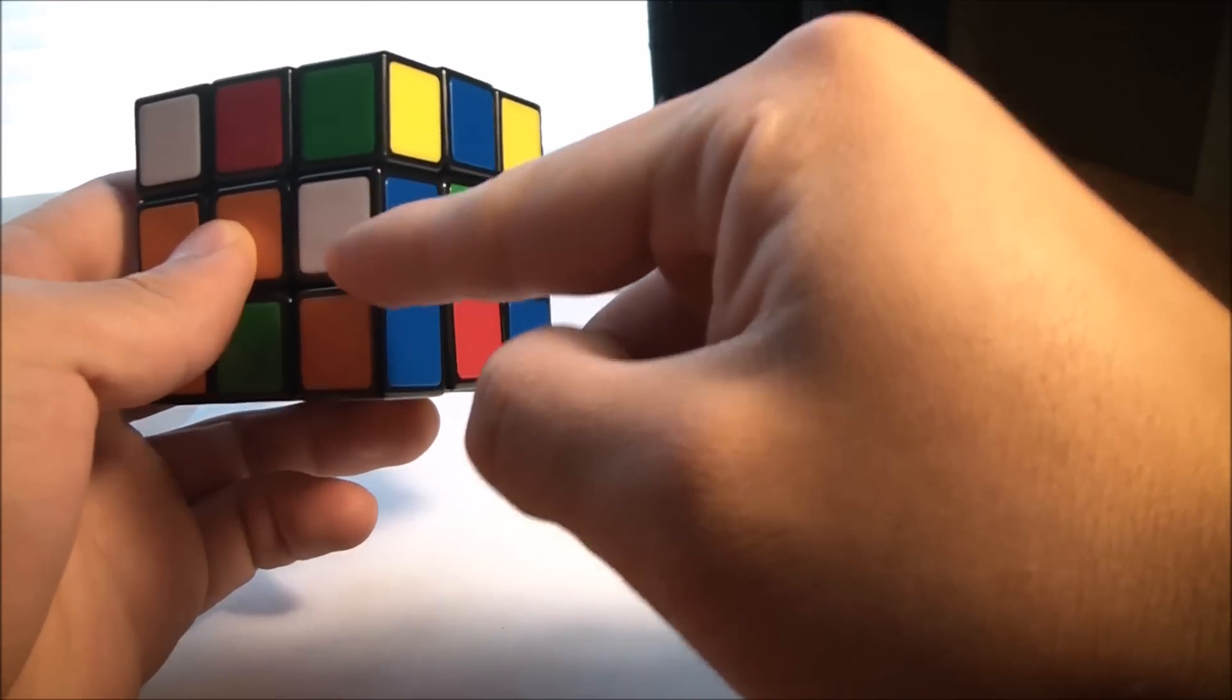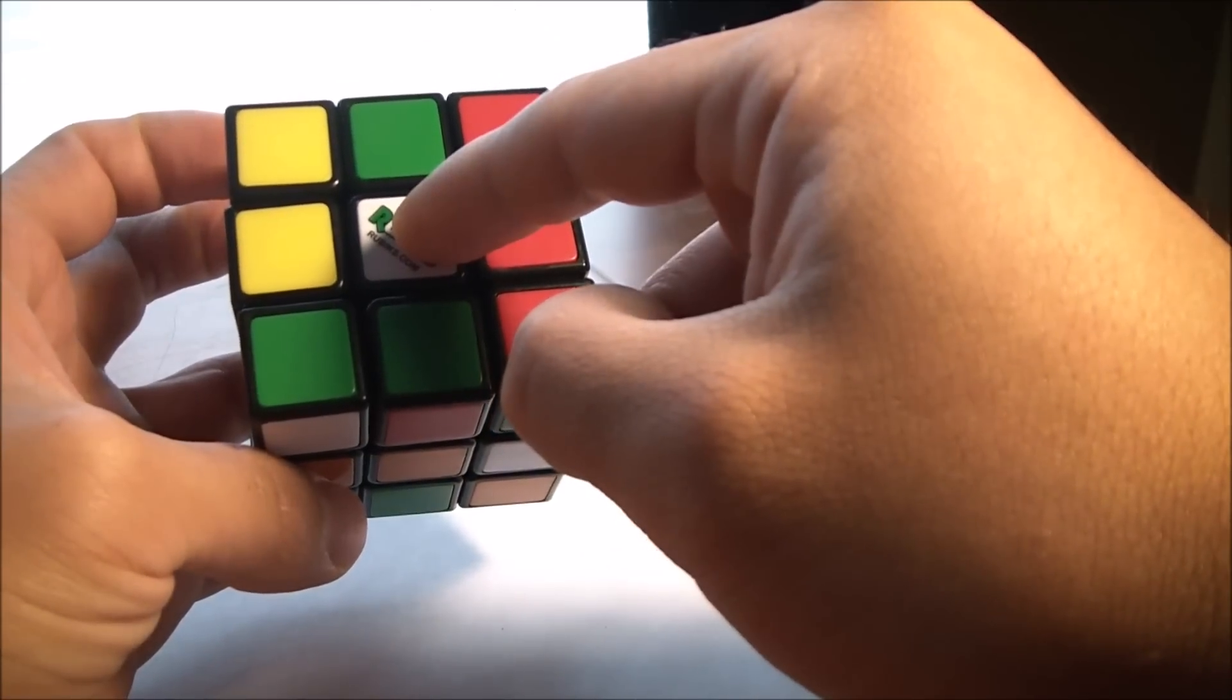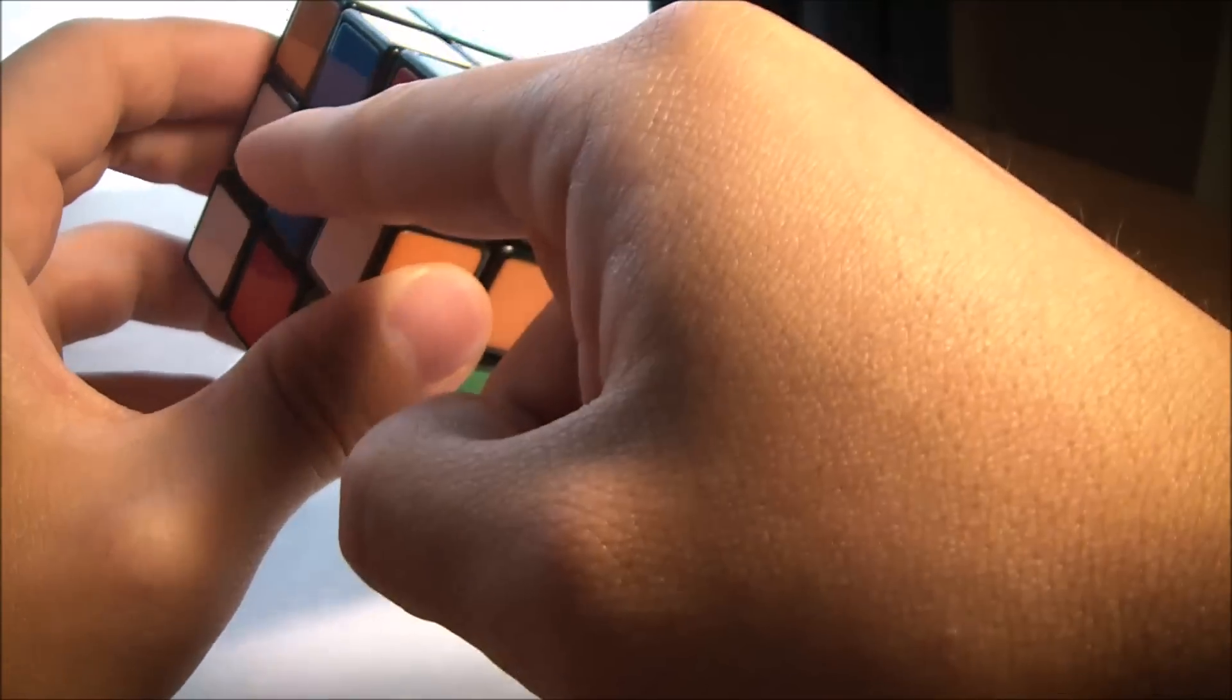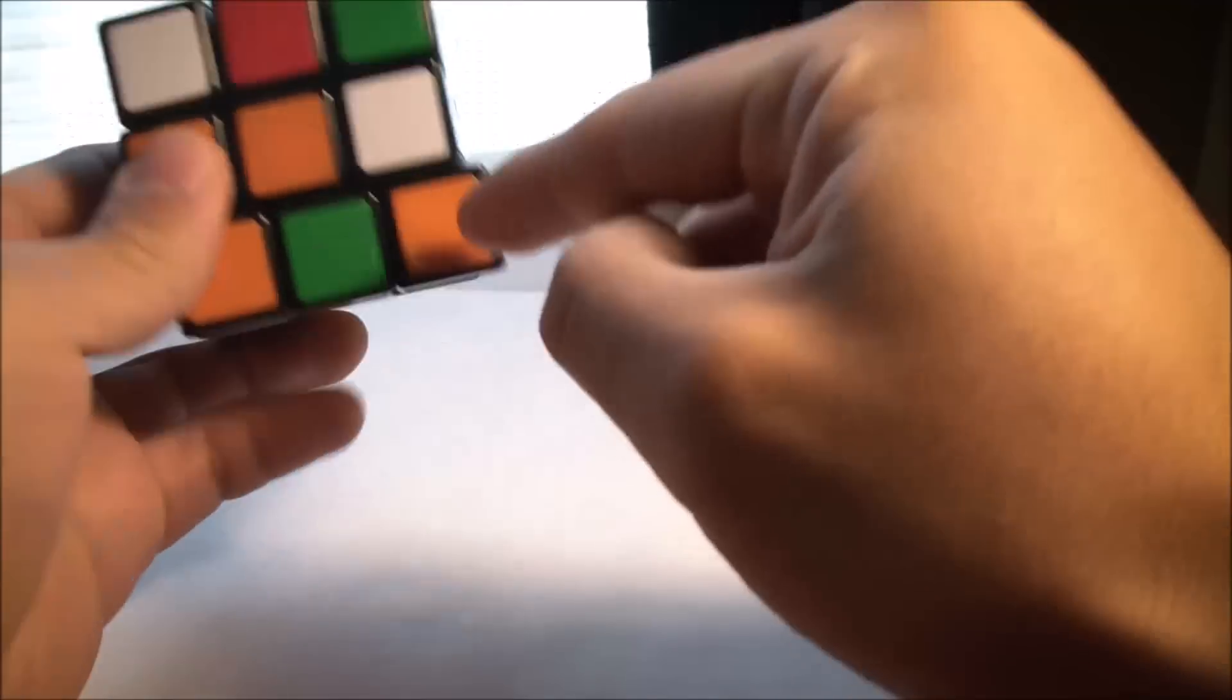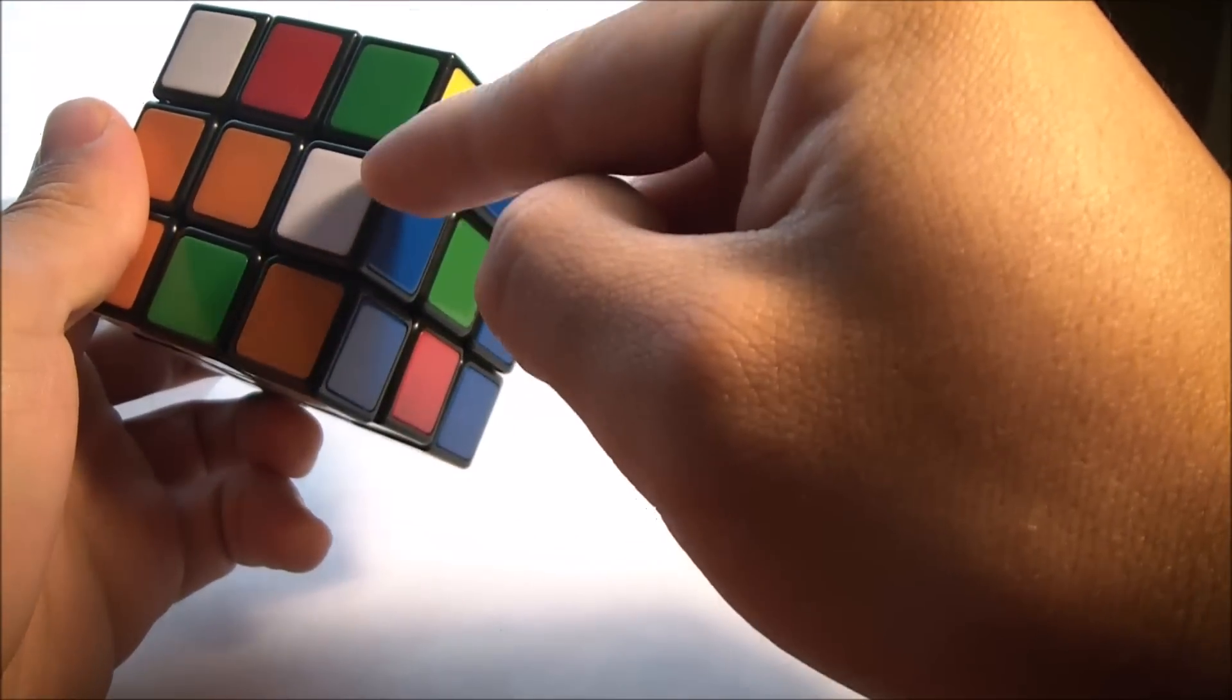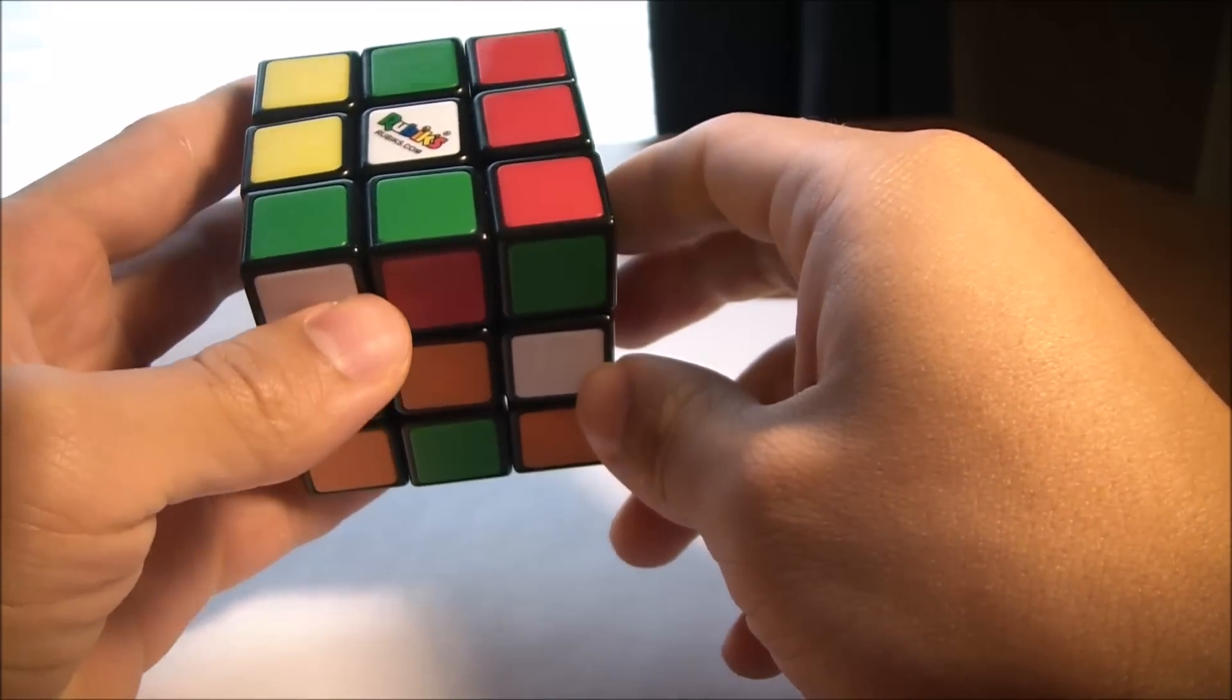This means it has to be with the white side and also the blue side. So in corresponding to these two sides, this edge piece right here belongs right here.